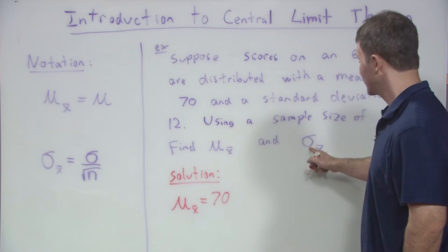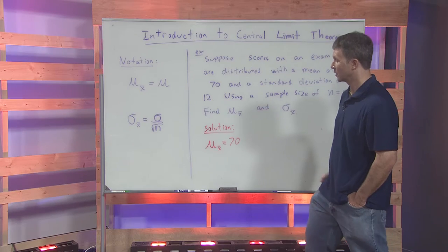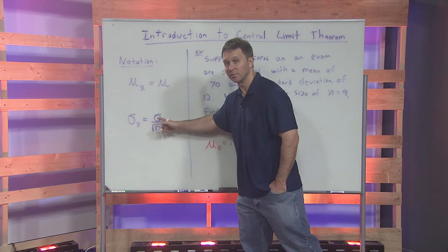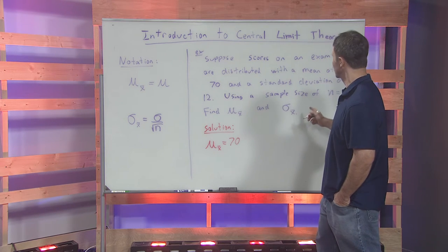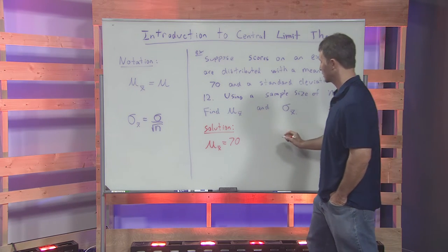To find sigma sub x bar, there's a little bit of work involved. Because remember, sigma sub x bar is the original standard deviation divided by square root of n. And in this case, n is 9. So let's work this out.